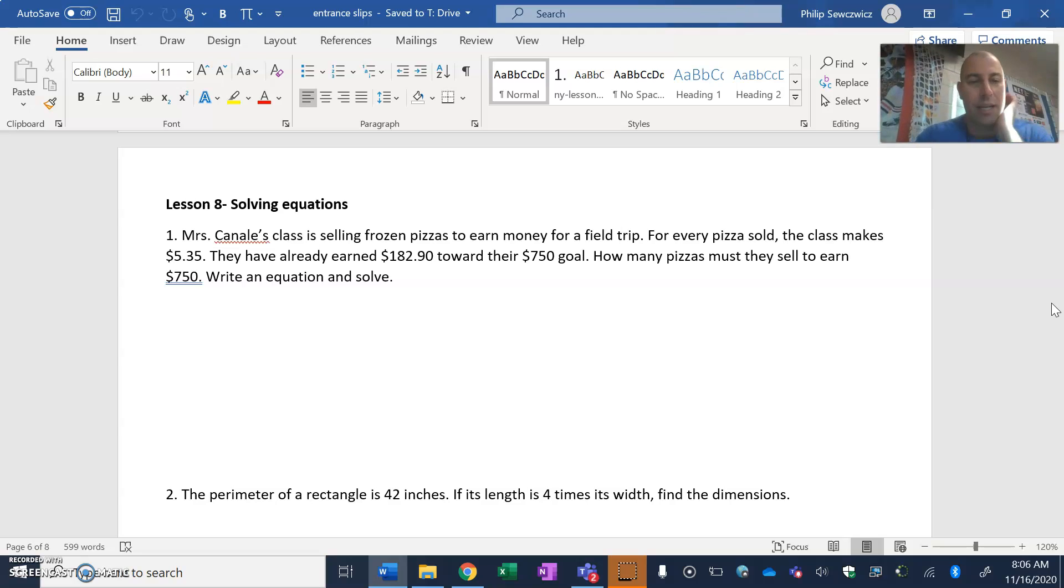Let's get to lesson number eight here. Lesson 8. If you haven't watched your notes, please get those taken care of because all of your questions come from some form of variety there. We've got this is Canalis. She's selling frozen pizza. Well, not her, the class is selling frozen pizzas to earn money for the field trip. So the class makes $5.35. They have already earned $182.90 toward their goal. How many pieces must they sell to earn $750?